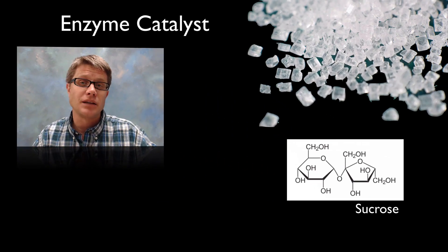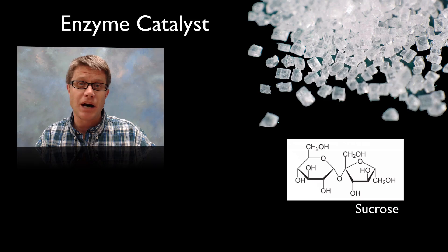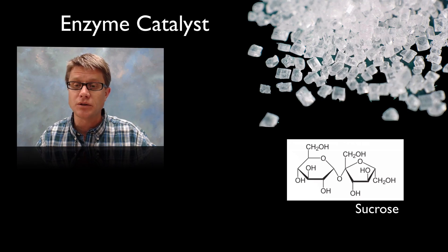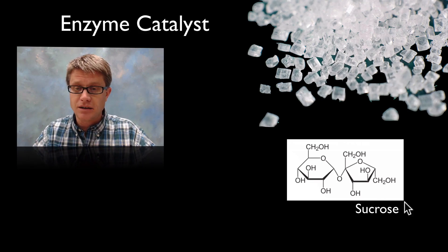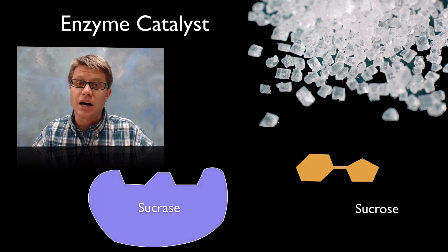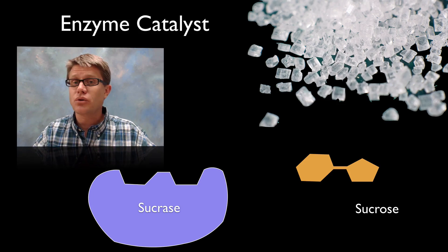Last type is going to be an enzyme catalyst. And so this is going to be a biological catalyst. It's found inside our body. And so a great example would be the enzyme that breaks down sucrose. Sucrose is simply going to be table sugar. And so if we look at it, it is a disaccharide. We have two sugar molecules attached together. If we represent it like that, then an enzyme that breaks that down would be called sucrase.